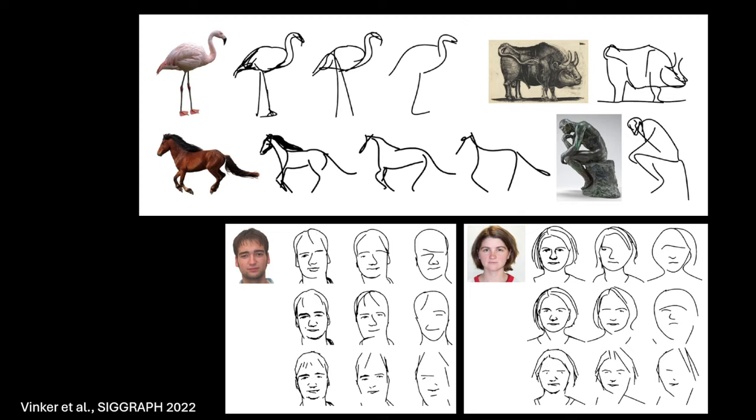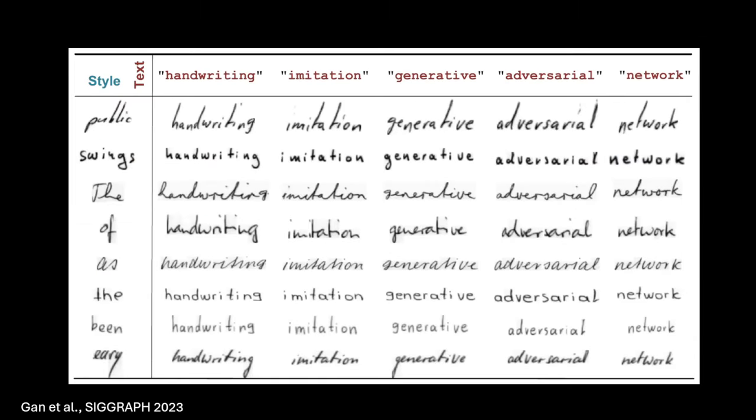Not exactly vector graphics, but related: there's been a lot of work on handwriting synthesis. HiGAN+, a GAN-based paper out this year at SIGGRAPH, takes a handwriting style you want to imitate, you give it whatever text you want, and it creates realistic-looking handwritten text in that style. This is a bit scary — if you can generate something in someone's handwriting for a last will and testament, it looks pretty realistic.